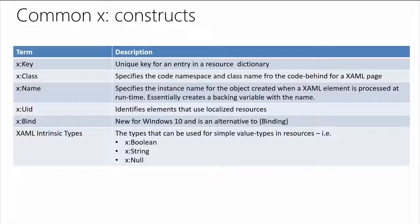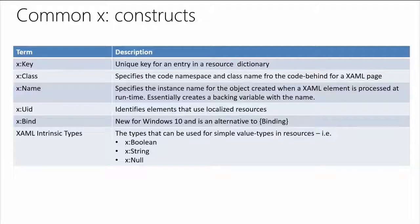New to the X namespace in Windows 10 is X:Bind. We've always loved data binding inside XAML — it's one of the most powerful aspects developers enjoy. You can see the classic binding syntax with curly brackets. That still works and everything's great about it. However, it's not the most performant way to data bind. The most performant way is X:Bind — a fully compiled binding with no reflection, which eliminates lag at runtime if you have many bindings.